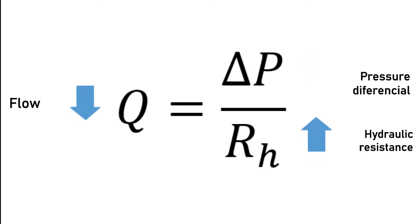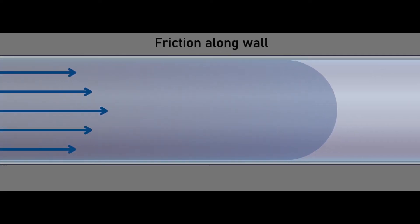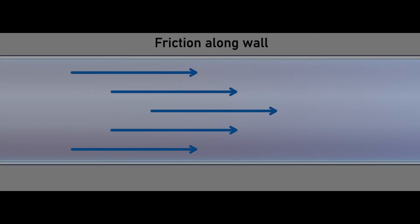However, the flow will decrease with a higher hydraulic resistance, meaning that these two are inversely proportional. Here, we show how the hydraulic resistance is generated by friction forces between the water and the surface of the canal.